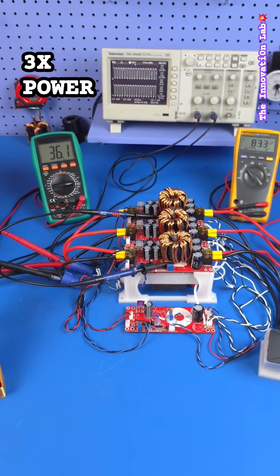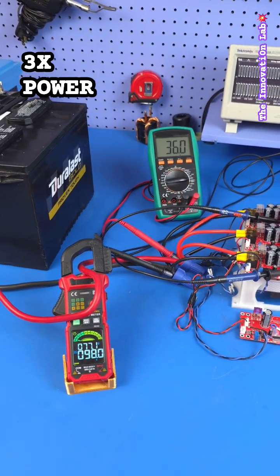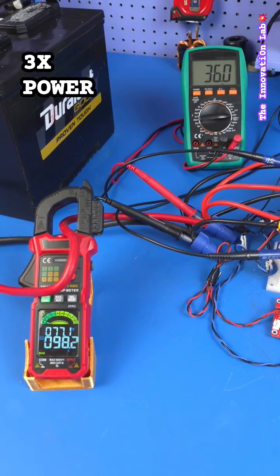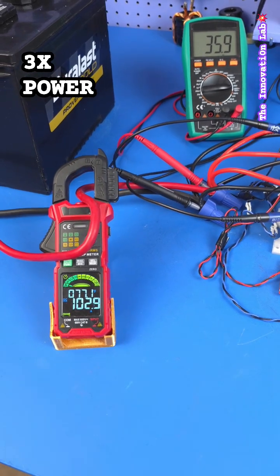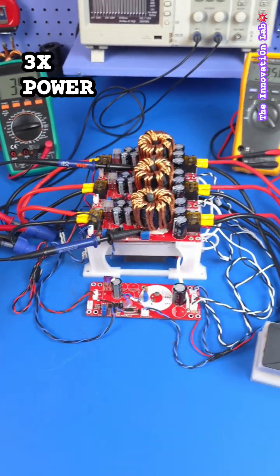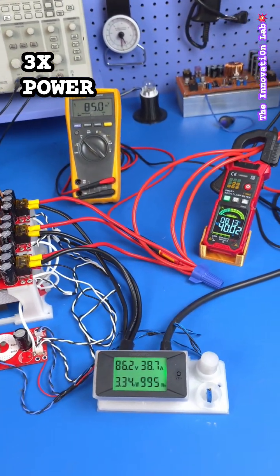As you can see, the system is functioning quite well. We're pushing in about 102 amps into the converter system, and we are pushing out 85 volts at 40 amps. This is amazing!